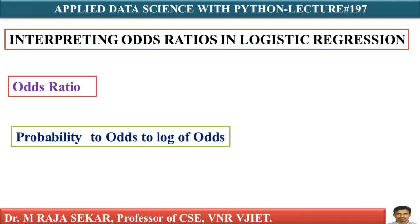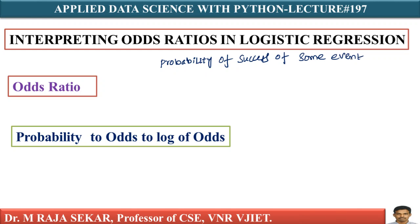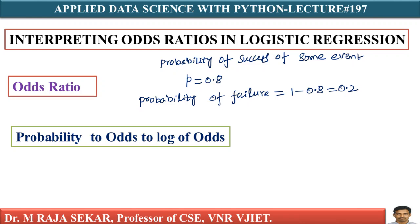From the probability to odds to log of odds — everything starts with the concept of probability. Let's say the probability of success of some event is P. Let me assume its value is 0.8. Then the probability of failure is 1 minus 0.8, that is 0.2.